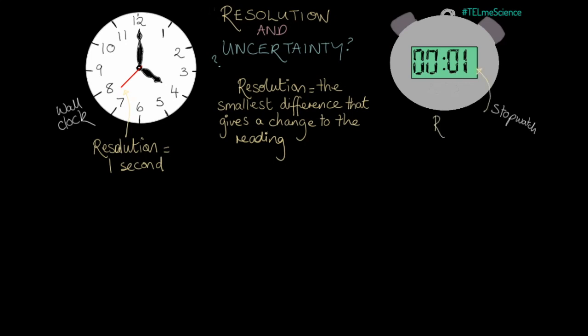A stopwatch typically has two places after the decimal point. This means it has a resolution of 0.01 seconds, one hundredth of a second.